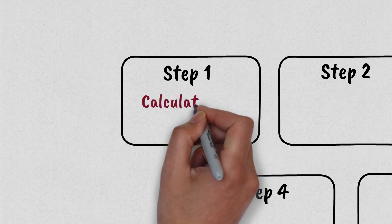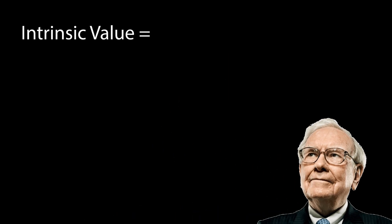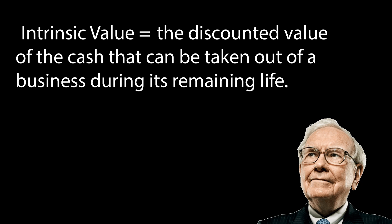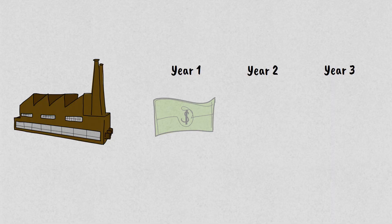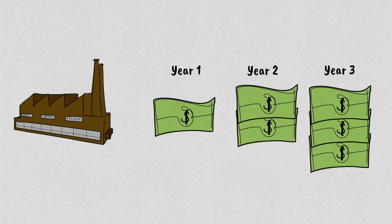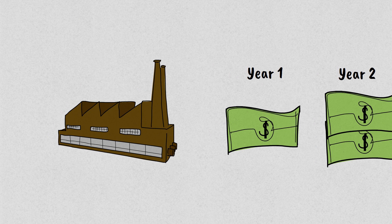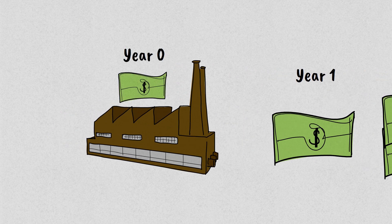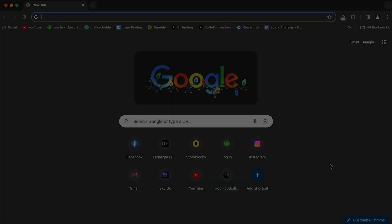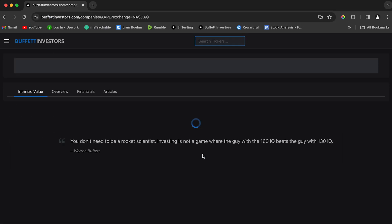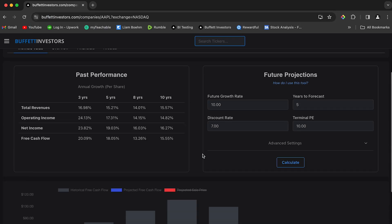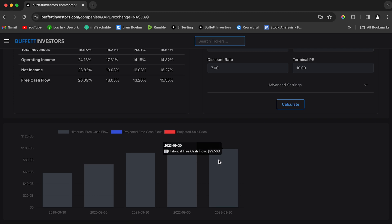Step 1 is we need to calculate the free cash flow of the stock. Warren Buffett says that the intrinsic value of a stock is the discounted value of the cash that can be taken out of a business during its remaining life. It just means how much cash is this stock or business going to produce for us. To work this out we first need to know the current free cash flow. Go to buffetinvestors.com — I'll use Apple stock as an example. Click on Apple stock, scroll down and you can see the free cash flow right here.